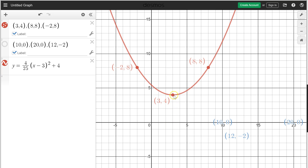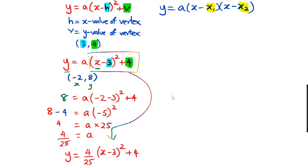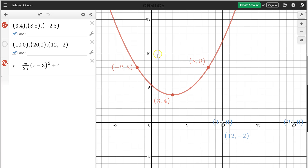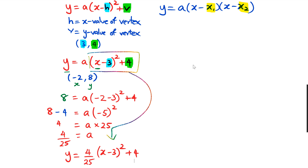So that's how you do vertex form. You need to find out where the vertex is, go back to your formula, substitute the vertex in there, then grab any other point from the graph — either (−2, 8) or (8, 8), it doesn't matter, either one will give you the same answer. Substitute it in and work out what a is.